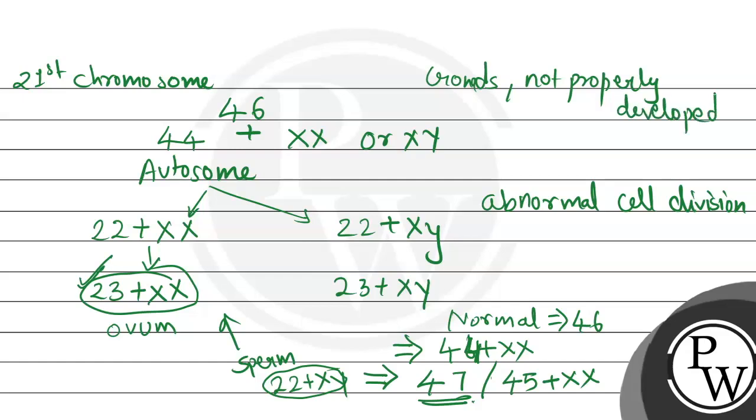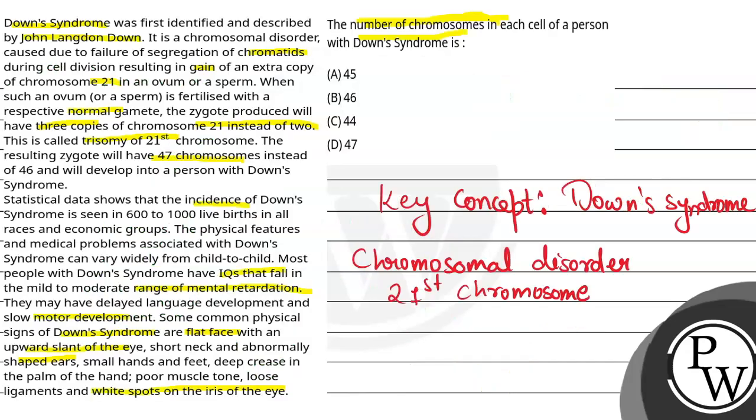And if we have a look at the number of chromosomes, that is going to be 47 in case of Down syndrome. Here, the trisomy of 21st chromosome is occurring, that's why the number of chromosomes is going to be 47. So as per our discussion, the right answer will be option D. I hope you understood well. Best of luck!